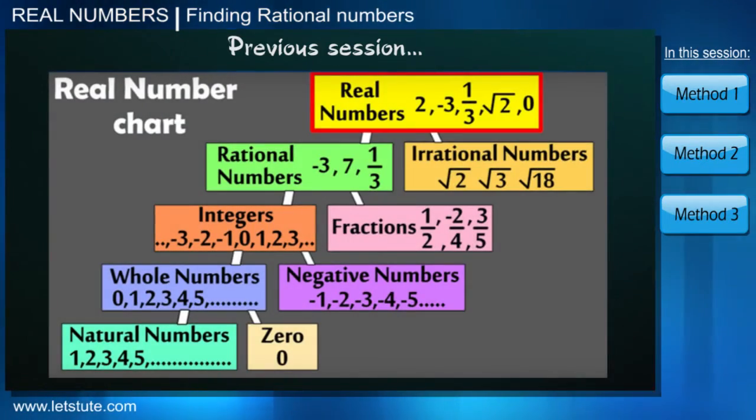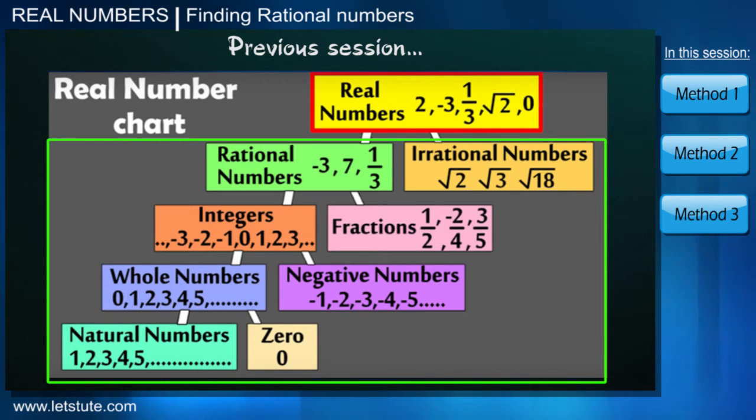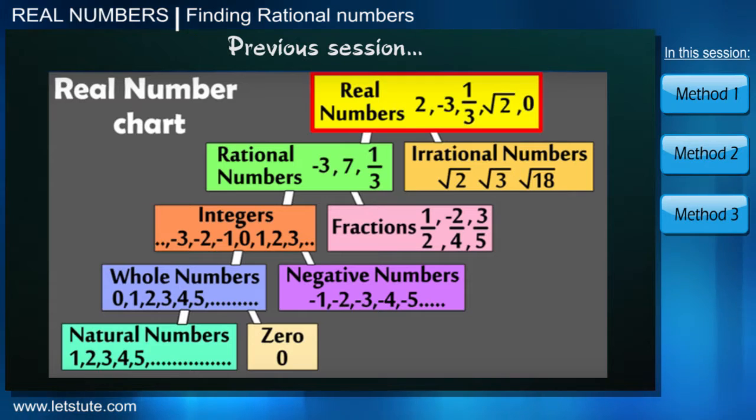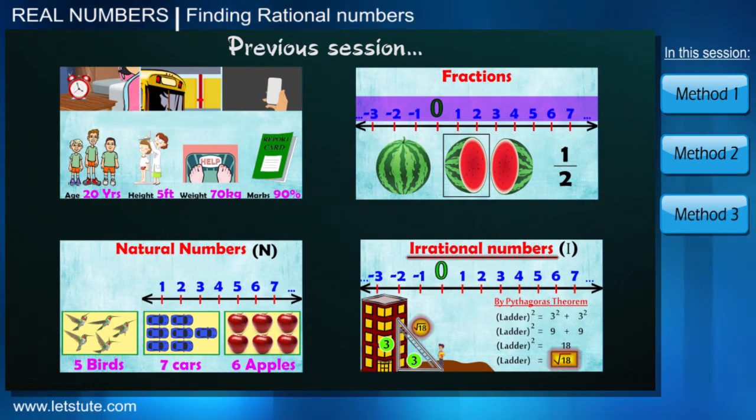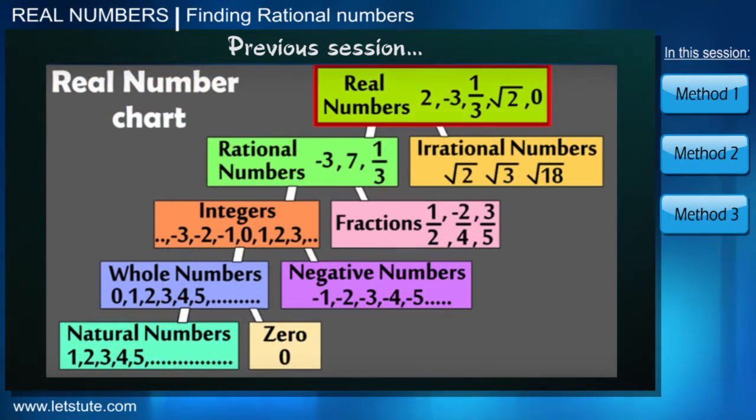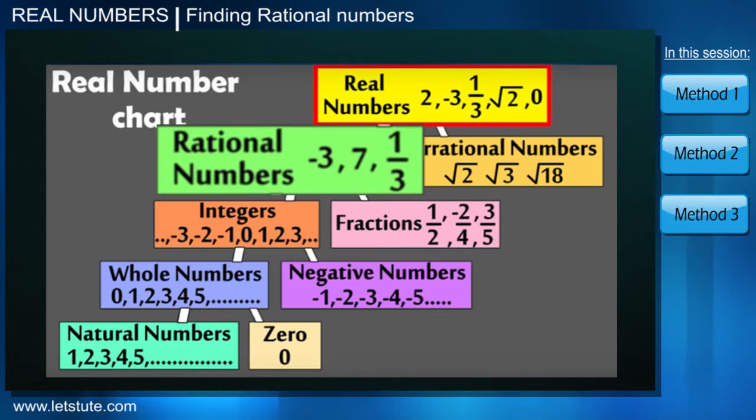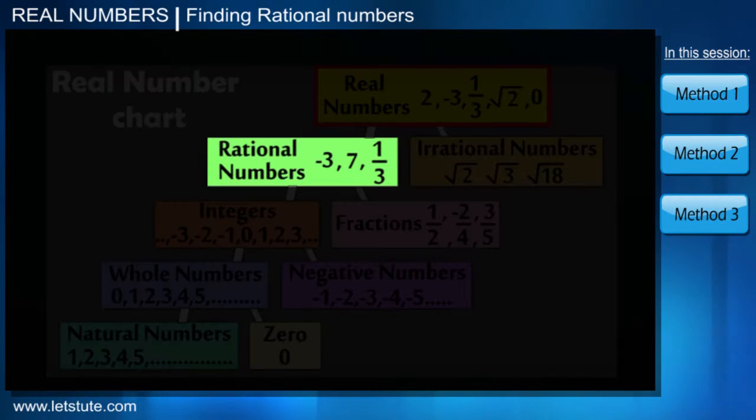In our previous session, we learned about various types of numbers that are collectively called real numbers. We also saw few examples where these numbers are used in real life. But under this, rational numbers are extensively used. So today we are focusing mainly on rational numbers and will learn ways to find rational numbers between any two given integers or fractions.